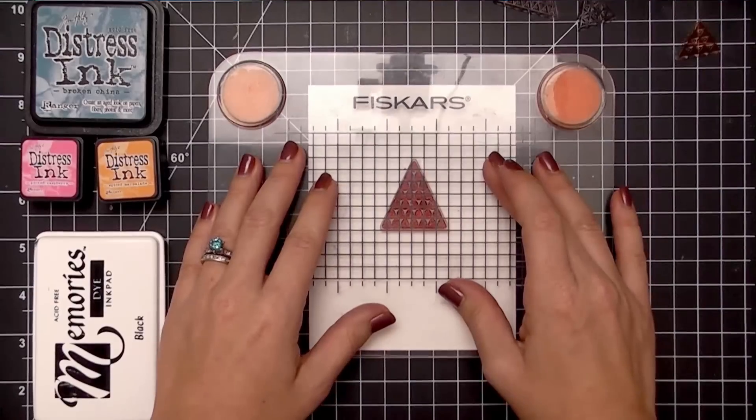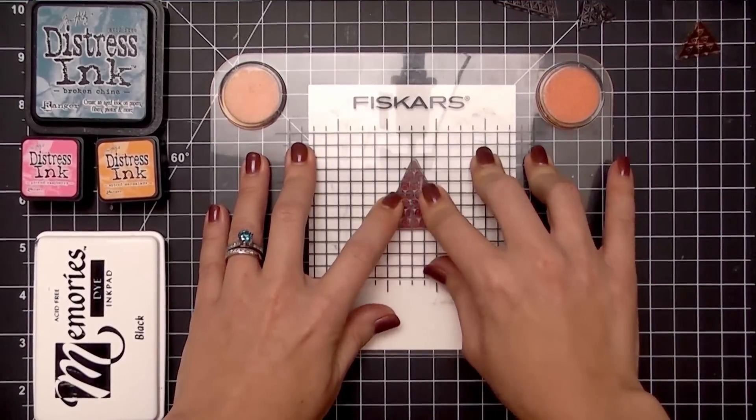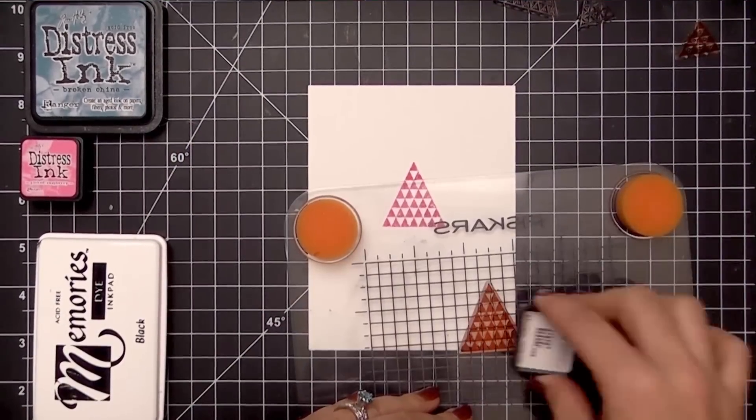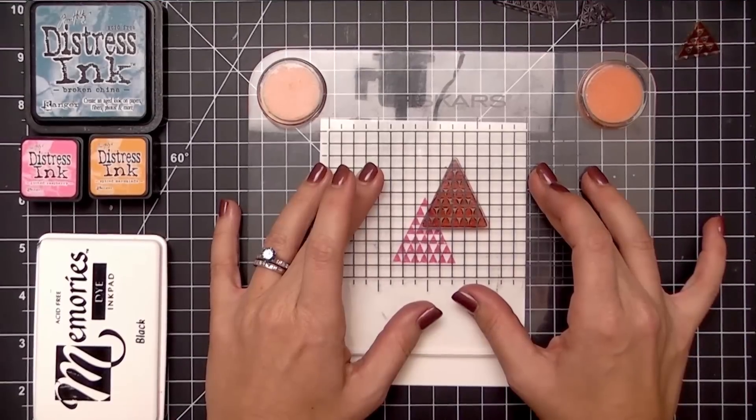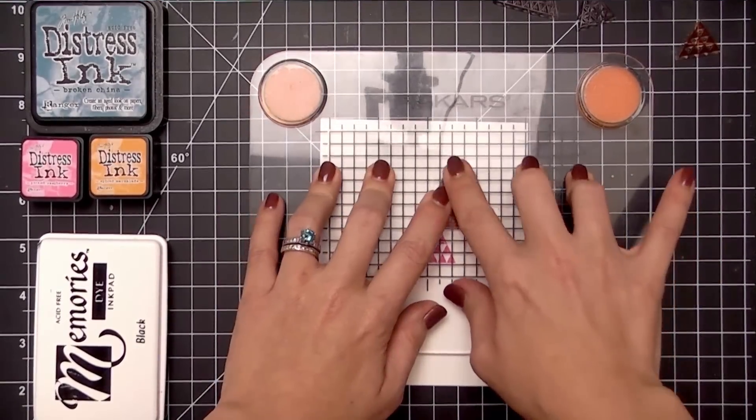I'm going to create a little grouping of these three triangles. I'm going to stamp them down and overlap them because when I spray this with that mister bottle, I want those colors to blend and bleed into each other and create new colors.